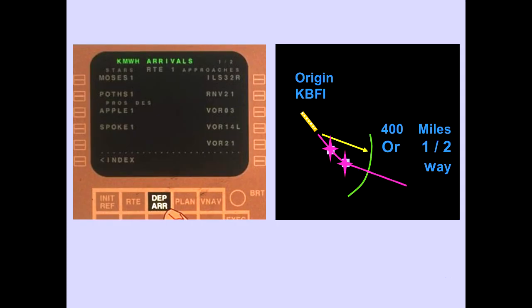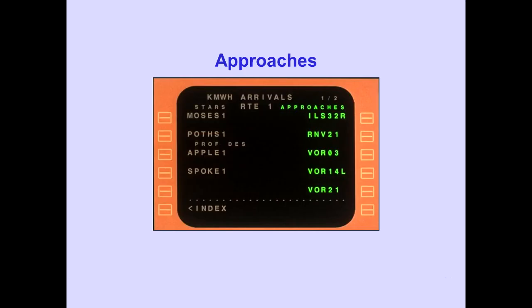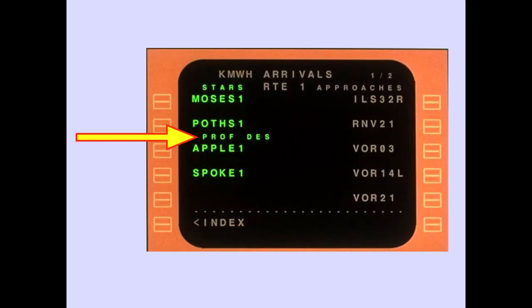When airborne, pushing the departure-arrival key displays an arrivals page. The destination-arrival page is displayed if you are more than 400 miles from the origin airport or over halfway to your destination. When the DEPAR page is selected, approaches are illuminated on the right side of the CDU. The arrivals page lists STARs and profile descents on the left side.